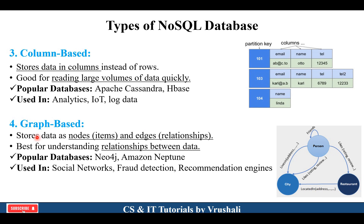The last type is graph-based NoSQL, which is one of the most popular NoSQL database types. All information is stored in nodes and edges format. For example, on Facebook, multiple people are nodes, and when one person sends a friend request to another person, that friend request is called an edge. Graph-based NoSQL understands the relationship between all the nodes. That's why it is popularly used in different social networks, fraud detection systems, and recommendation engines. Popular databases like Neo4j, Amazon Neptune use graph-based NoSQL for generating different social content. All these types of NoSQL databases are used as per the requirement of a particular project.